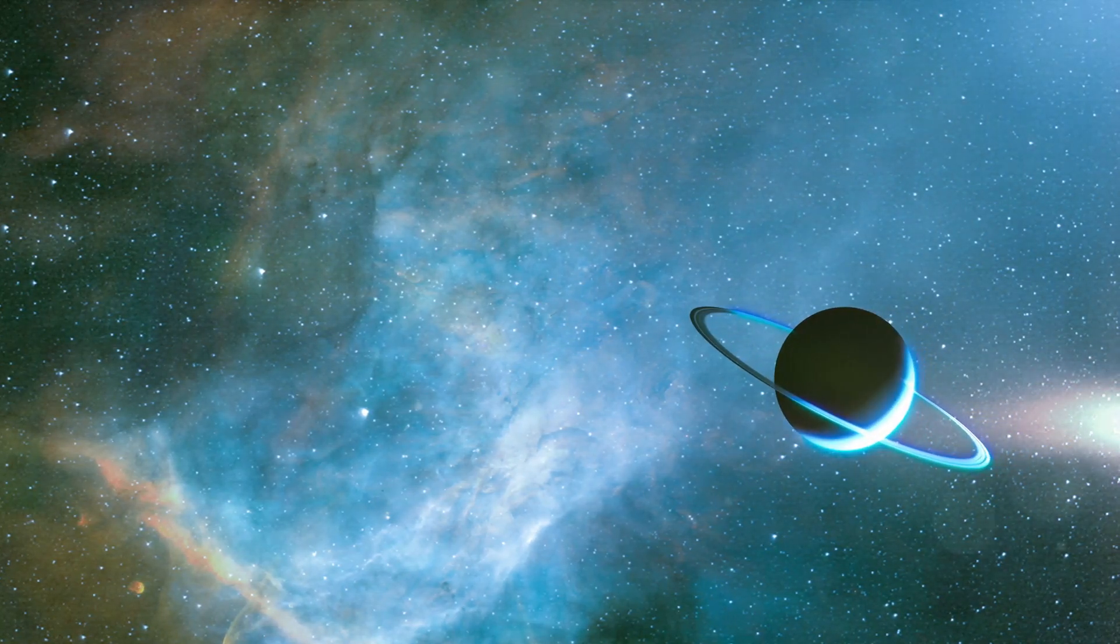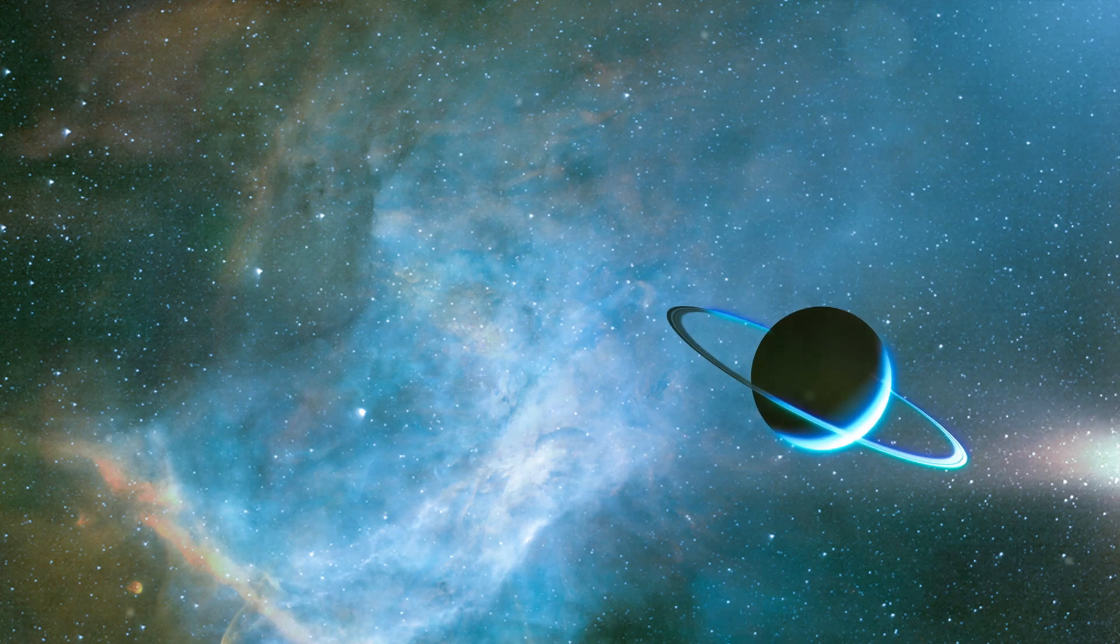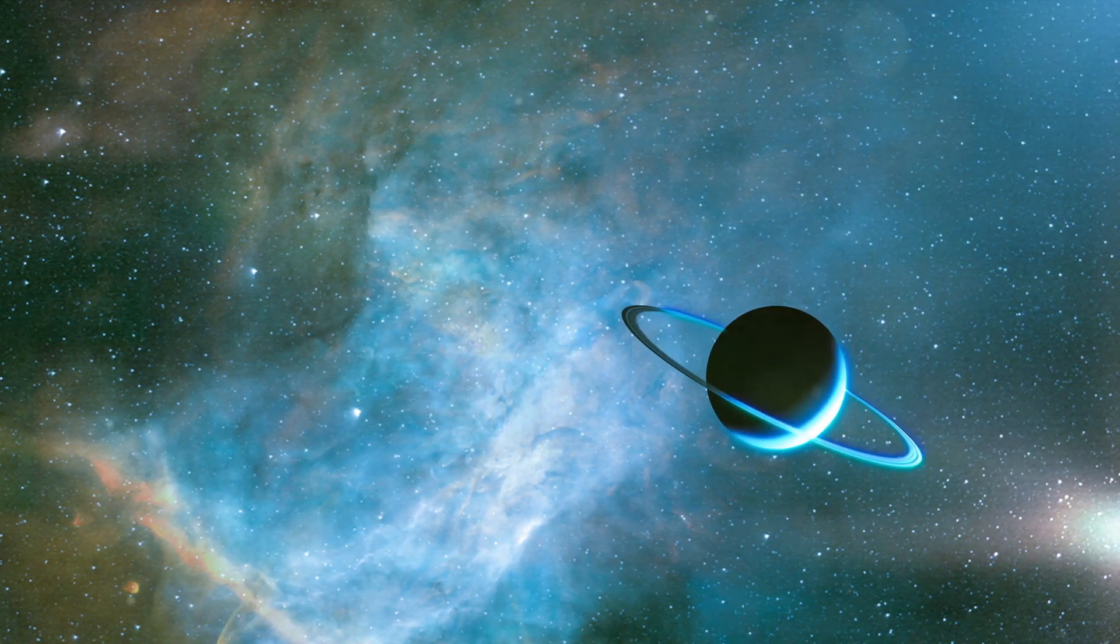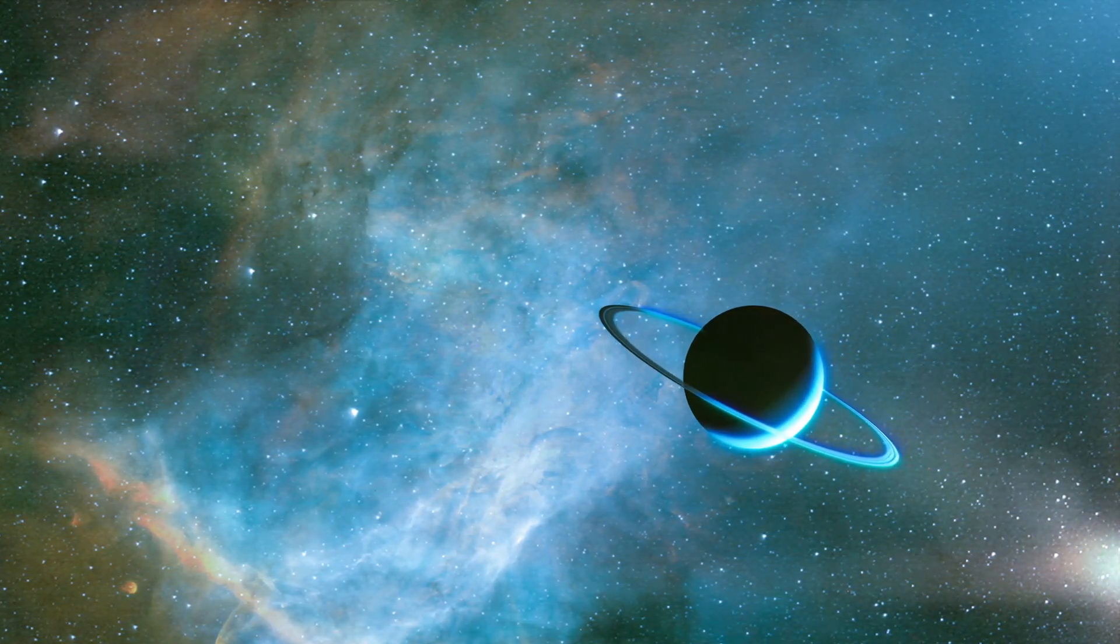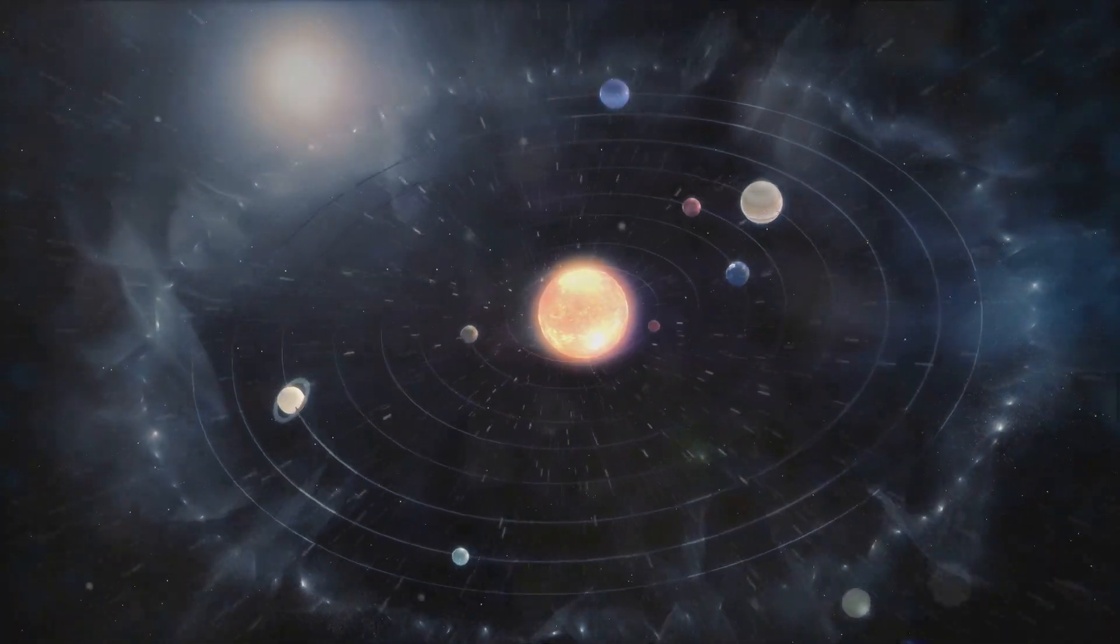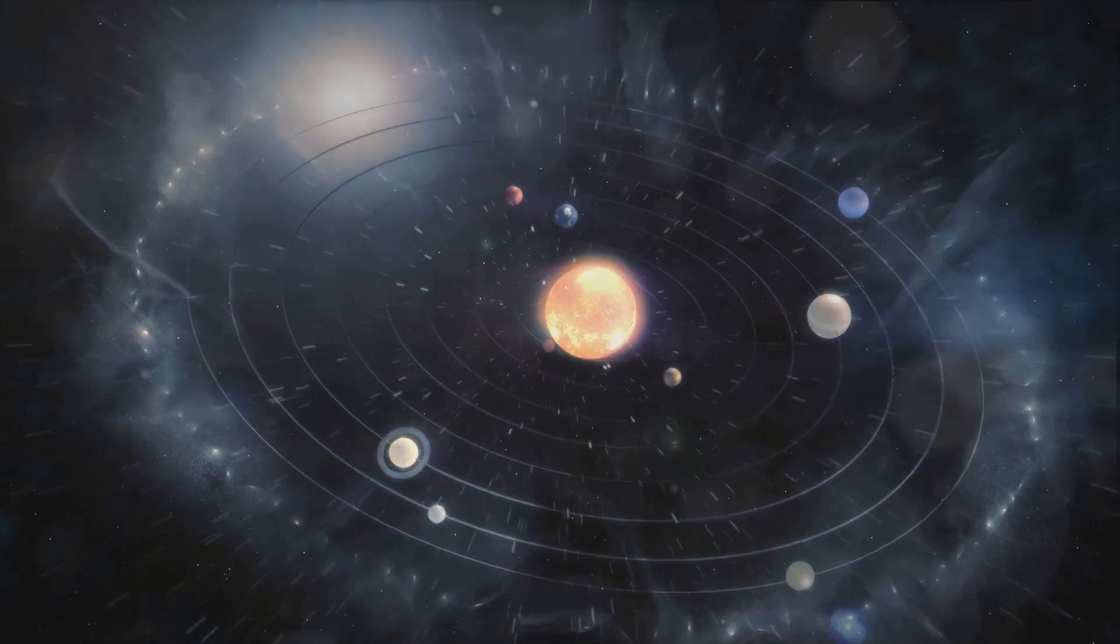These planets, usually overshadowed by the Sun's dazzling light, will have their moment under the Moon's shadow. Their visibility during the eclipse presents a unique opportunity for sky watchers to appreciate the vastness of our solar system and the harmonious dance of celestial bodies.